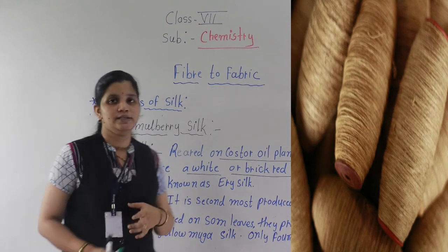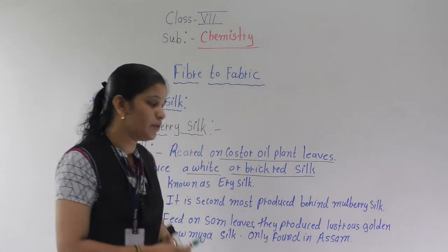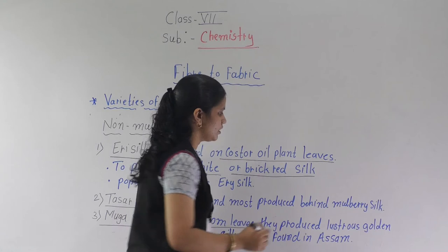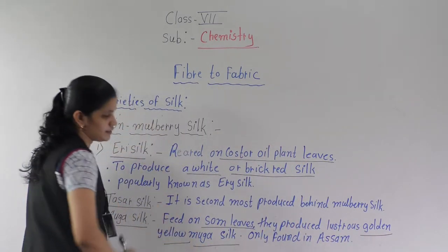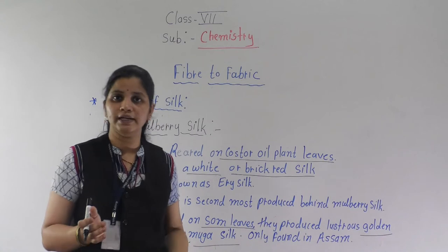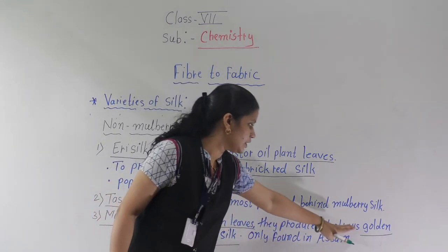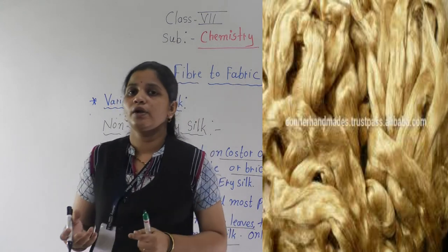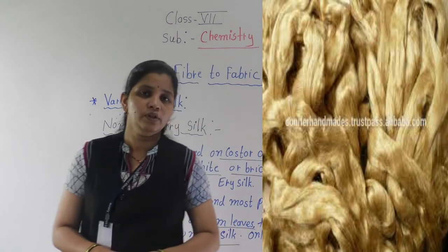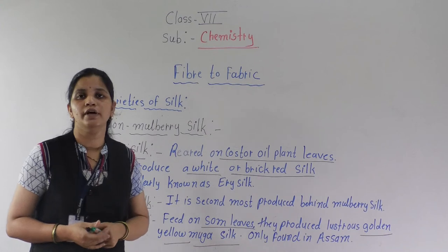The third variety is muga silk. The silkworms that produce muga silk feed on som leaves. They produce a lustrous, golden yellow muga silk. Muga silk is only found in Assam, but it is supplied all over the world. Each of these silks feeds on different plant leaves and produces a different type of fiber.